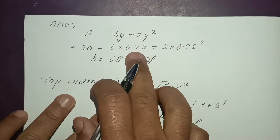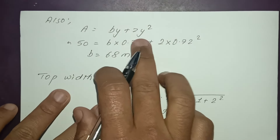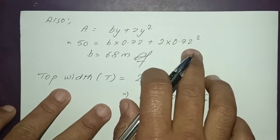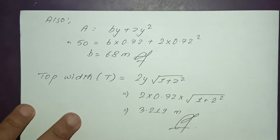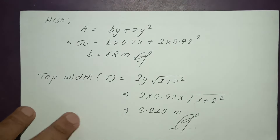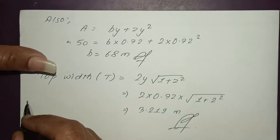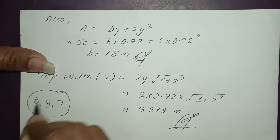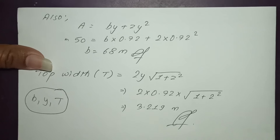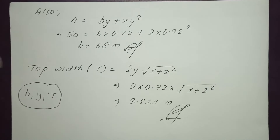The expression involves y squared. For the most efficient, or most economical, trapezoidal canal design, we solve for base, depth, and top width.